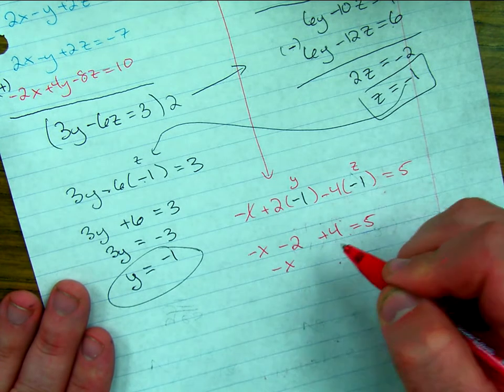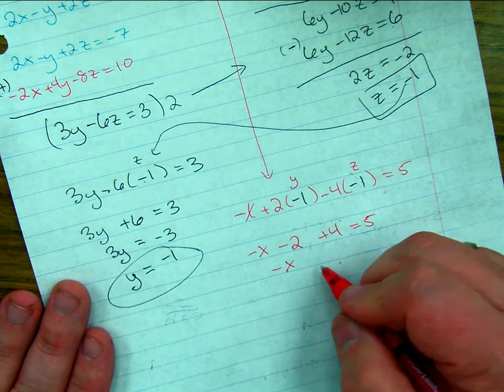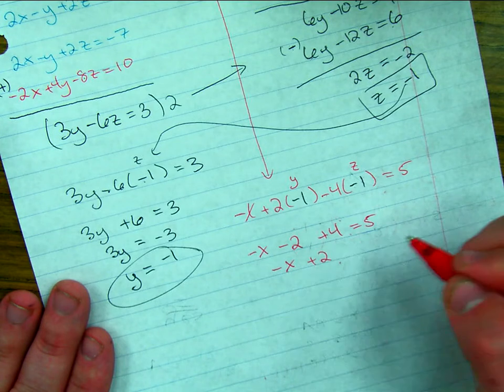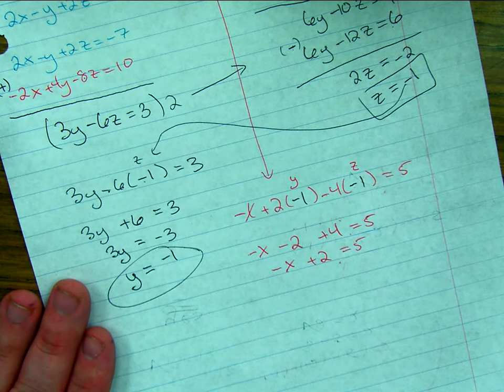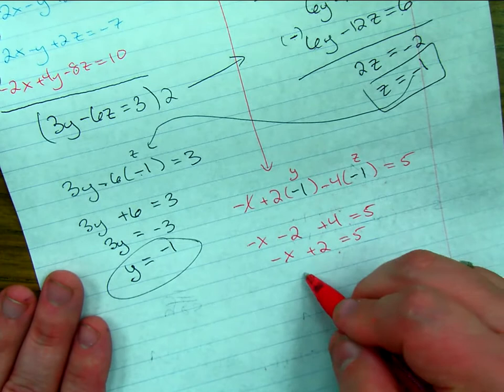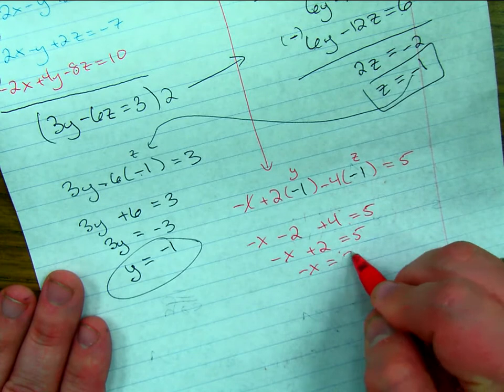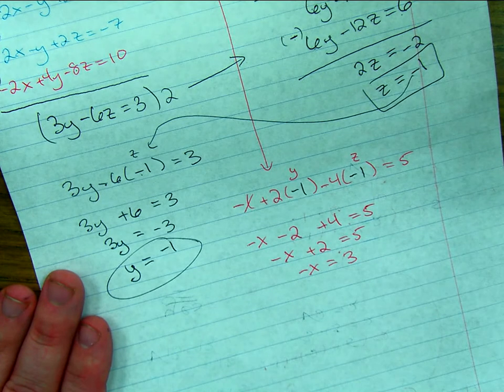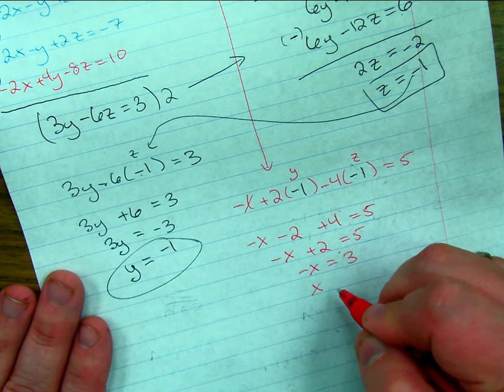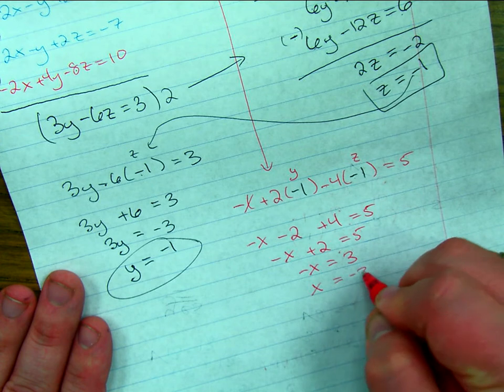Negative x. Combining negative 2 and positive 4, I get positive 2. Equals 5. I'm now going to subtract 2 from both sides. Negative x equals 3. And finally, dividing by negative 1, x equals negative 3.